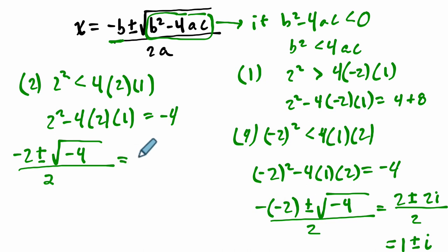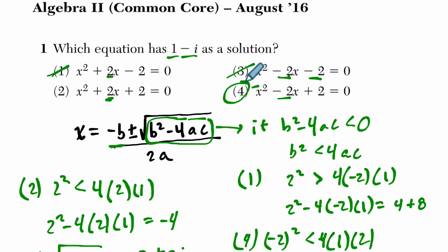Whereas here, in choice 2, we would get negative 2 plus or minus 2i over 2. And that gets me negative 1 plus or minus i, which is different. So if we go back, that leads us to choice 4. So it's kind of an interesting problem. And it might seem like I'm doing lots of work here. But really, once you get used to this idea that they're asking you which of these has a complex solution, you would look at when the discriminant is negative and go from there.